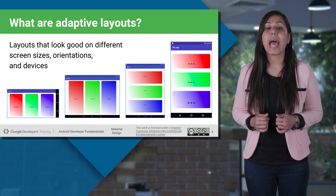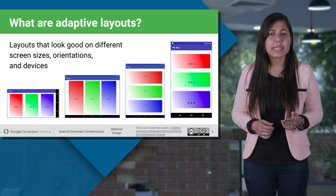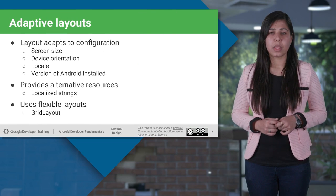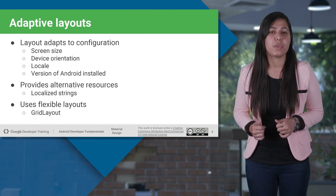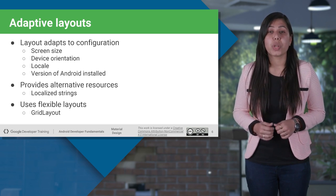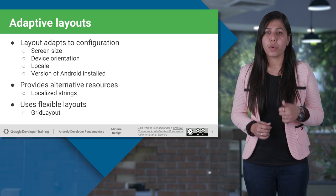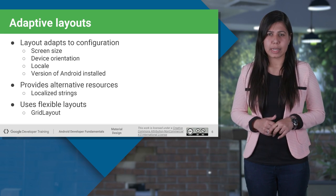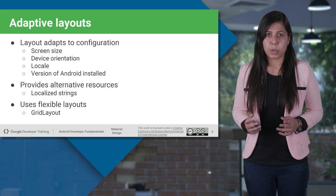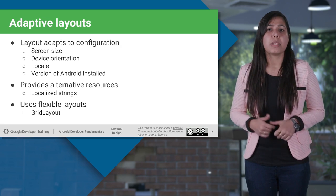With adaptive layout, the app gets displayed according to the configurations like screen size, orientation, locale settings, or according to the Android version running on the device. It is necessary to supply alternative resources to support specific device configurations. At runtime, Android will detect the current device configuration and load the appropriate resources for your application. For example, grid layout adjusts to the available space — its main purpose is to solve alignment and is considered a flexible layout. You will implement it during your practicals.